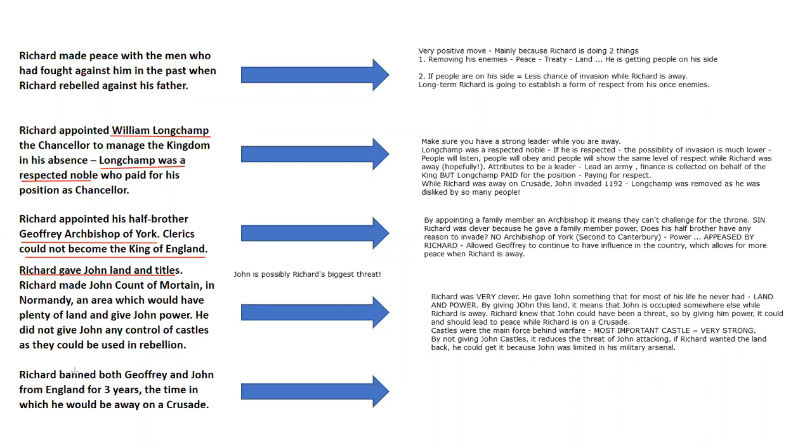Richard banned both Geoffrey and John from England for three years. The most important thing here was he banned John for three years. Richard anticipated that he would be away on crusade for that long. So first thing, he removes the main threat of invasion, the most important. But the biggest problem here is, what if the crusade went longer? What if something went wrong? For example, Richard gets captured. Spoiler. That's something that Richard may not have considered. But what you've got here is all the things that Richard did to develop his securing of the throne.